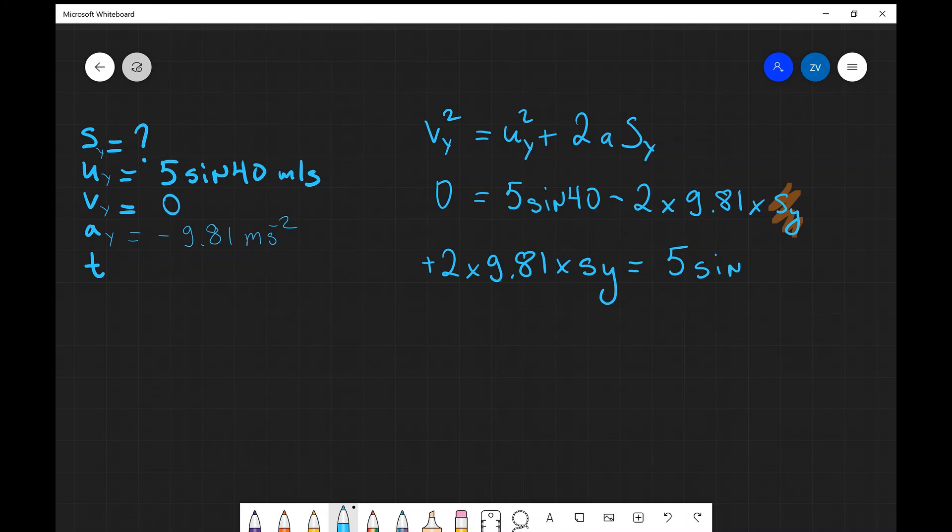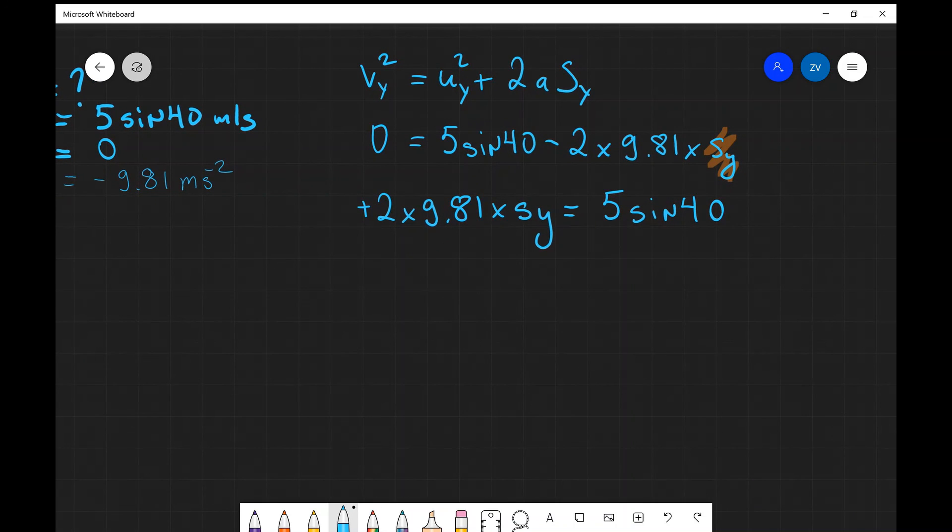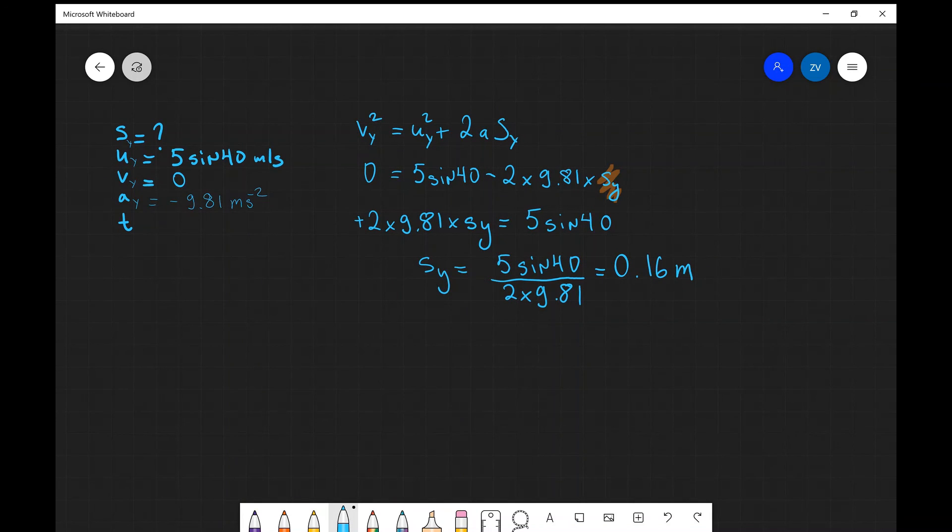Which means that S subscript y is going to equal 5 sin 40 divided by 2 times 9.81. And let's put that into a scientific calculator, so 5 times sin 40 divided by 2 times 9.81, which is going to give us 0.16 meters. So we can see that the maximum height is decreased dramatically.